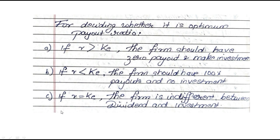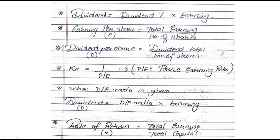Other than this, there are a few supporting formulas which are required. Dividend equals dividend percent into earning, if the dividend is given in percentage form. Earning per share, if not given, the formula will be total earnings upon number of shares. Dividend per share is total dividend upon number of shares. Cost of equity or cost of capital formula is 1 upon PE ratio, where PE stands for price earning ratio. When dividend payout ratio is given, dividend will be dividend payout ratio into the value of earnings. Rate of return is total earning upon total capital.